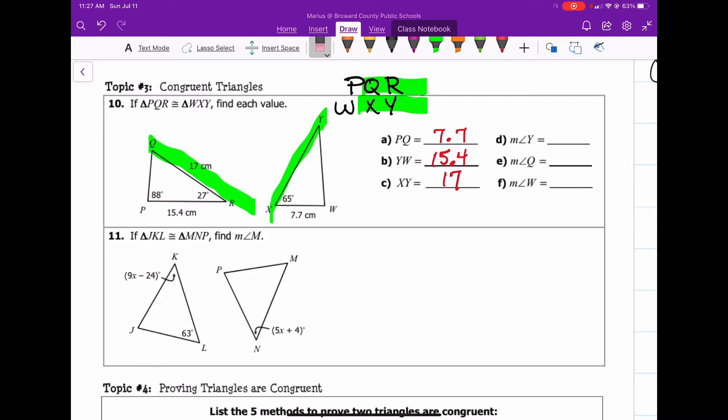Letter choice D says angle Y. Angle Y is the same as angle R. Well, angle R is 27 degrees, so Y is 27 degrees.